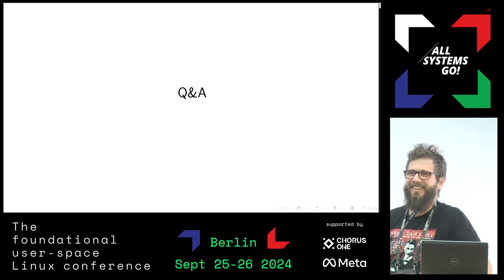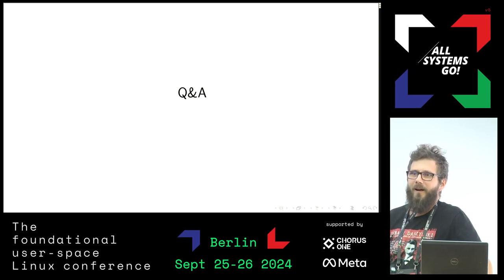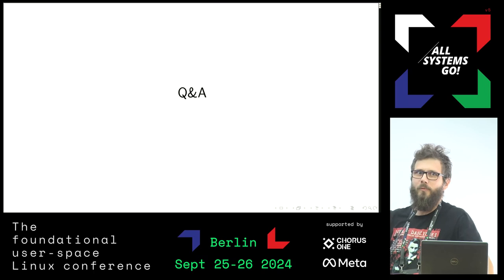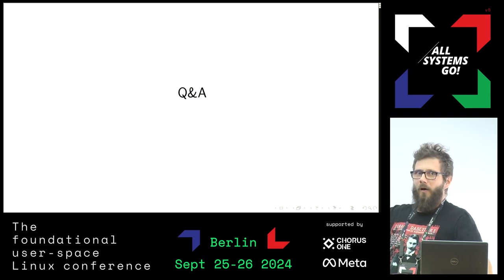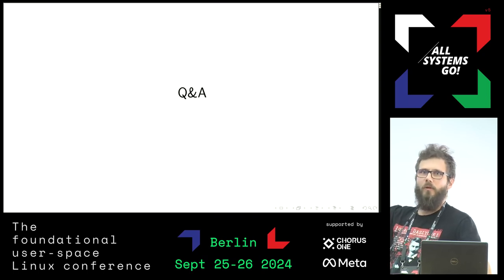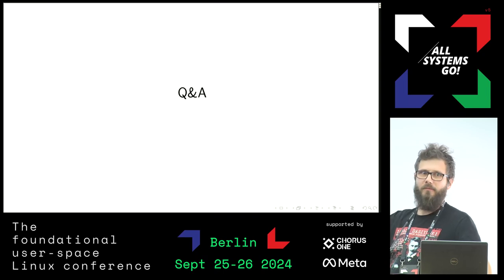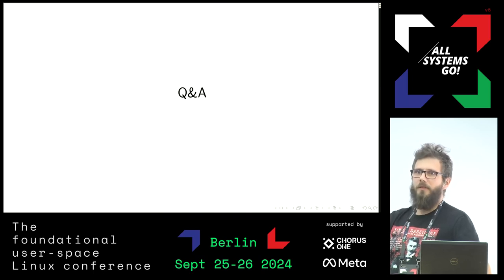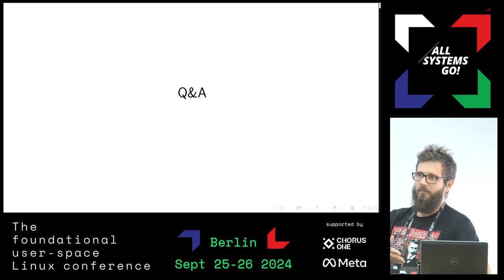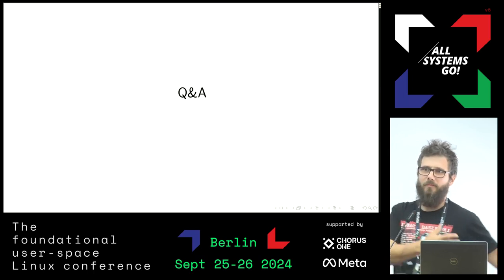Question: What do you think systemd upstream could be doing to make your life easier? I don't know — not much, really. We have to see how the new package maintenance model will work. We answer to internal clients in the company. They say they want it upgraded, and then we upgrade. It worked fine until V244, and then they didn't want to upgrade — they didn't want to spend the time to do it. So we fell a little behind.